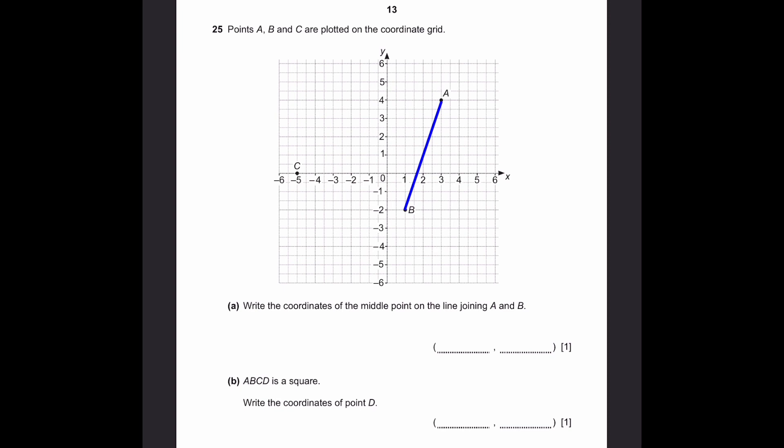Let's see what's the displacement from B to A. So this will be 2 units right, and then 6 units up. And the midpoint will be half of this displacement and half of this displacement. So 2 by 2 and 6 by 2, that's 1 unit right and 3 units up, which is 2 comma 1. That's the answer.